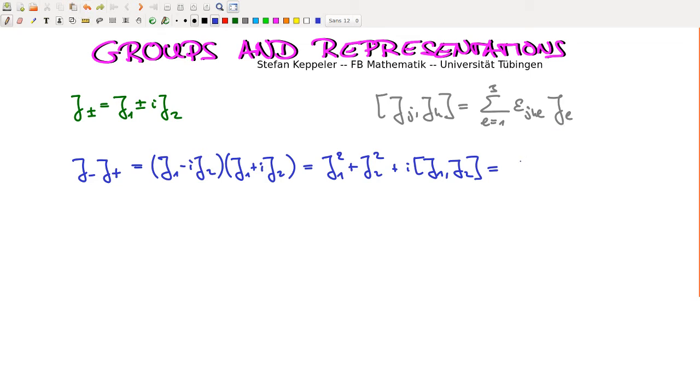So we have j1 squared plus j2 squared minus j3. Now we can conclude that j squared, which is just j1 squared plus j2 squared plus j3 squared, can be expressed in terms of this product: j minus times j plus. And then here we have to add j3 squared, and we have to add also a j3 in order to compensate for this minus j3, like this.